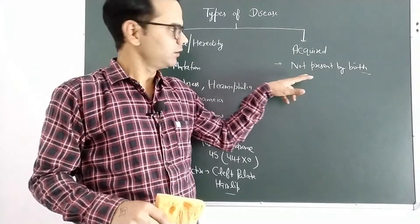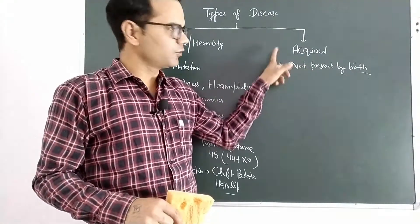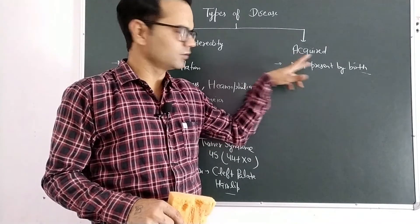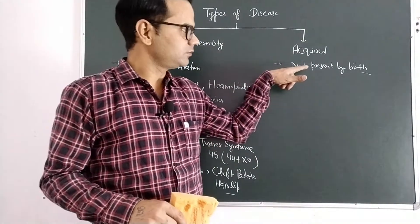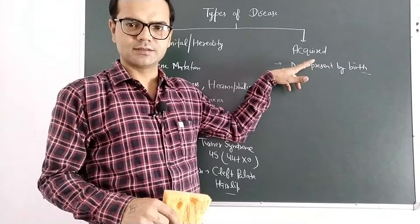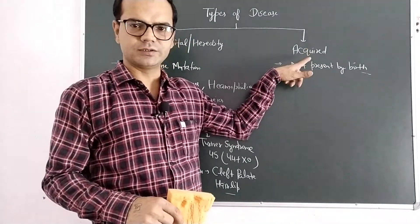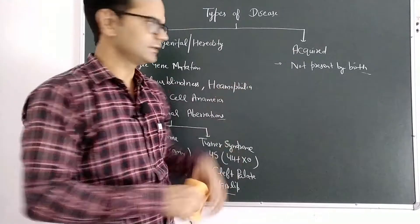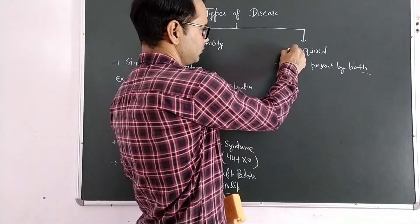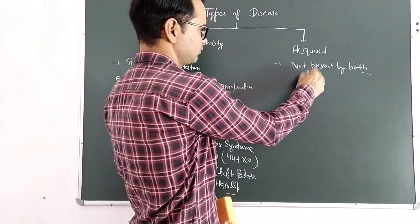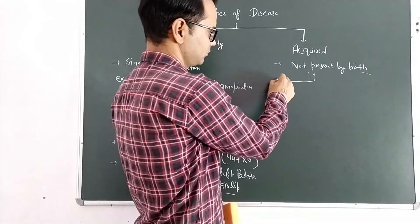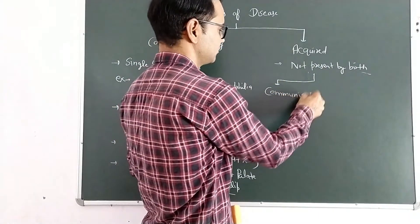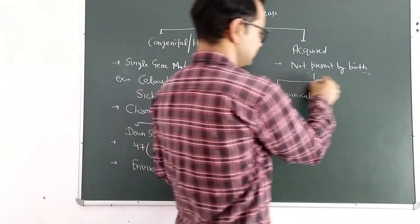Opposite to congenital disease, acquired diseases are not present at birth. They occur in the body due to external sources. Acquired diseases are further classified into two types: communicable disease and non-communicable disease.